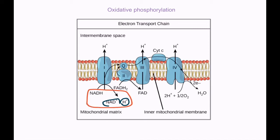The electrons produced enter the transport chain, where they are transferred through a series of electron carriers, moving from a higher energy level to a lower energy level. This causes the release of energy, which is used by the proteins to pump out protons.